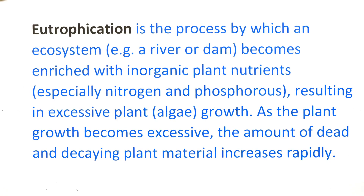Eutrophication — this is the definition you must know very well, and it is from the guidelines. Eutrophication is the process by which an ecosystem, for example a river or dam, becomes enriched with inorganic plant nutrients, especially nitrogen and phosphorus, resulting in excessive plant or algae growth. As the plant growth becomes excessive, the amount of dead and decaying plant material increases rapidly. The overabundance of these nutrients leads to rapid growth of algae, which covers the surface of water and blocks out sunlight. The dead algae sinks to the bottom, depleting oxygen supplies as it rots, causing fish and other plants to die off, leaving an ugly stinking mess.